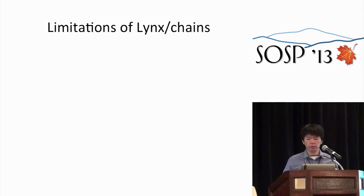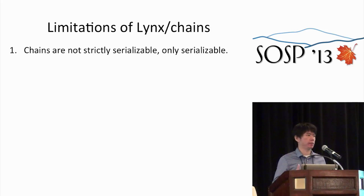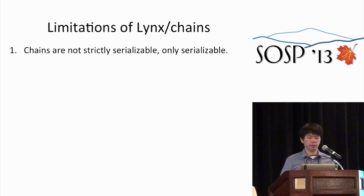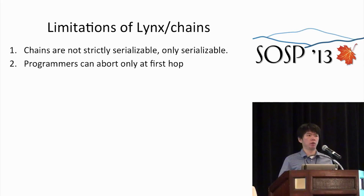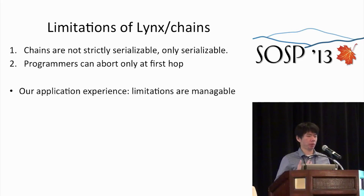Before moving on, I need to address a few limitations of Lynx. First, chains only provide serializability guarantees, not strict serializability. So under some situations, you might get unexpected ordering of transactions, and developers have to work around that. Second, programmers can only abort in the first step, so when writing some transactions, developers have to use techniques to work around this. In our experience, though, we think these two limitations are not a big problem, and we can still write many useful applications that adapt to them.